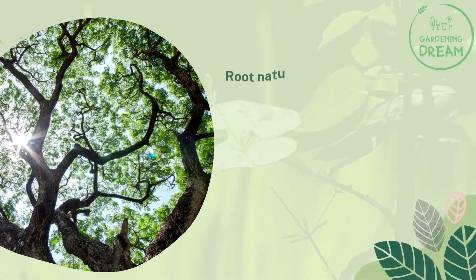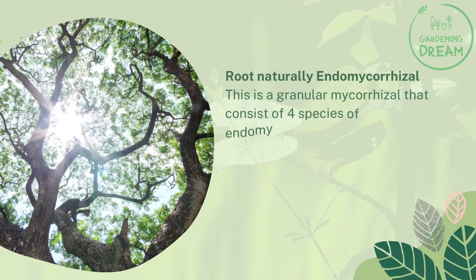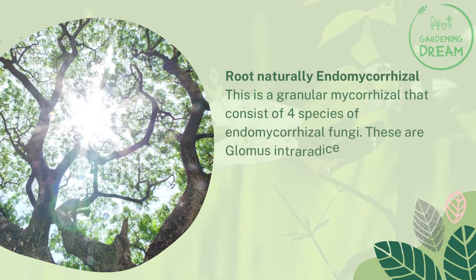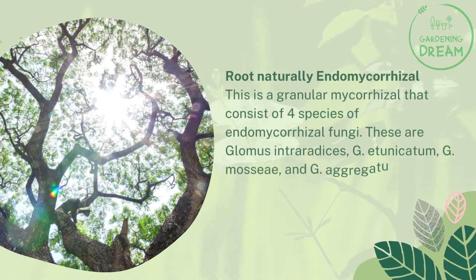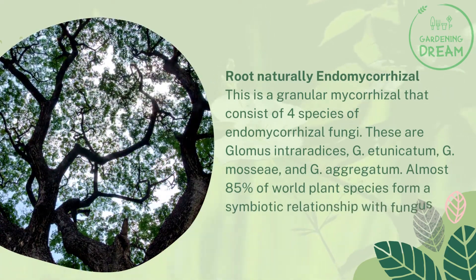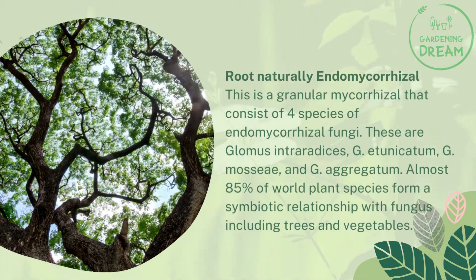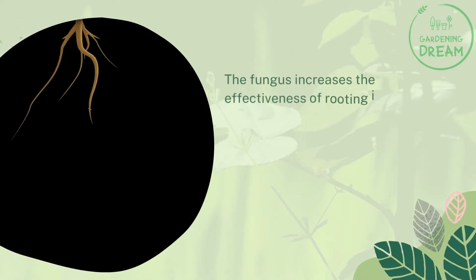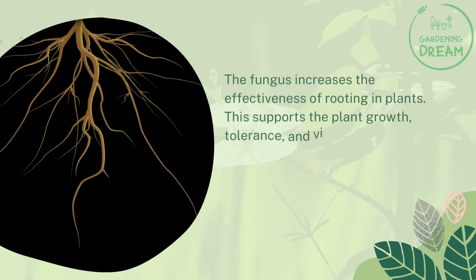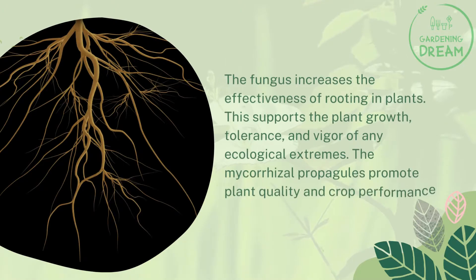Root Naturally Endomycorrhizal is a granular mycorrhizal product consisting of four species of endomycorrhizal fungi: Glomus intraradices, G. etunicatum, G. mosseae, and G. aggregatum. Almost 85% of world plant species form a symbiotic relationship with fungus, including trees and vegetables. The fungus increases the effectiveness of rooting in plants, supporting plant growth, tolerance, and vigor under ecological extremes. The mycorrhizal propagules promote plant quality and crop performance through their rooting ability.